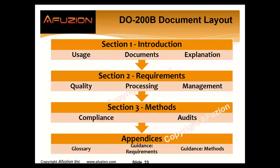DO200B has key sections. Section 1 tells us how to use it, what documents to apply, and explains the high level. Section 2 is about requirements: how we perform quality assurance, data processing, and data management. Section 3 covers methods: how we ensure compliance, how we perform audits. Then there are appendices, a glossary, guidance requirements, and methods for guidance.